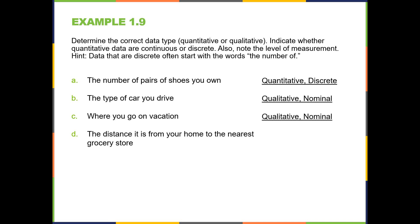The distance from your home to the nearest grocery store. A distance is a quantity, so it's quantitative. I would have to measure the distance, so that would make it continuous. Now is it interval or ratio? Can I have zero distance? If your home were actually the grocery store, it would be zero distance. So technically yes, we can have a zero amount of distance, making this quantitative, continuous, ratio.